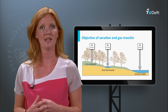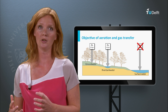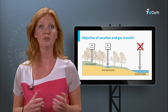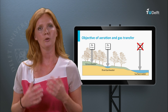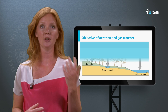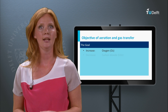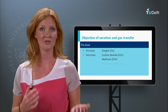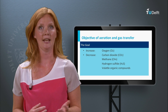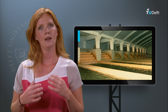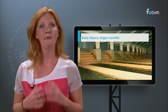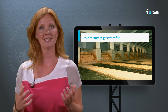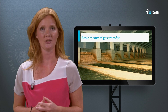Aeration is the treatment process in which water is brought in close contact with air to change the content of the dissolved gases in the water. For the treatment of groundwater the aims are to increase the oxygen content and decrease the content of carbon dioxide, methane, hydrogen sulfide and volatile organic compounds. However, before introducing the technologies used for aeration, I will first tell you about the basic theory of gas transfer.